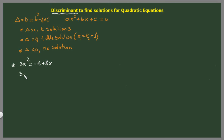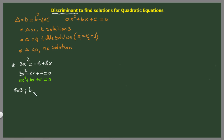So it goes like this: 3x² — taking both terms to the other side — that would be minus 8x plus 4, and the whole thing equals 0. Now we can just identify by writing the standard form ax² + bx + c = 0 below and matching terms. We can see that a equals 3, b equals minus 8, and c equals 4.